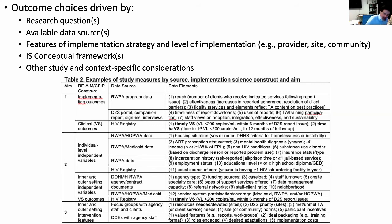I've included here an example from a recent NIH proposal that we submitted. It was a hybrid design, measuring both implementation outcomes and health outcomes. We delineated by aim in the proposal the implementation outcomes, which data elements were being used to construct them, and what the data sources were. In some cases, we mapped which aspects of our conceptual framework — in this case, both RE-AIM and CFIR — to the outcome choices.